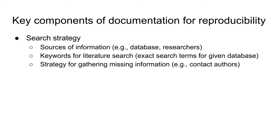We will first go through some key components of documentation for reproducibility. First, it is crucial to document your search strategy. What are your sources of information? This could be a database like Google Scholar, but you could also have asked other researchers who are experts on the topic. In case you did a database search, what were the exact keywords you used, and did you contact authors of articles in case you missed some information, or what else was your strategy for dealing with missing data?